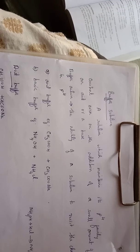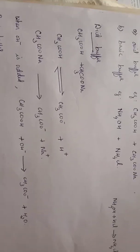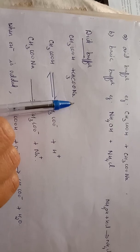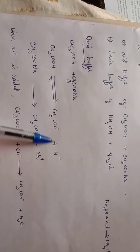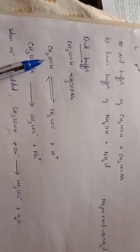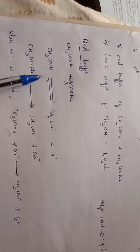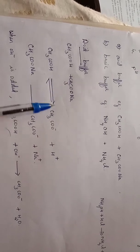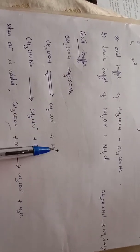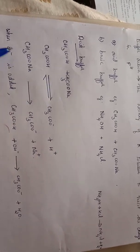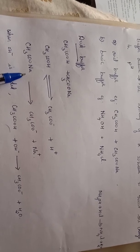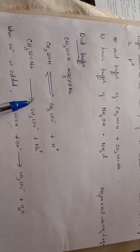Buffer solution is very important — it resists the change in pH. Let's look at the acid buffer action. The acid buffer is a mixture of acetic acid and sodium acetate. Acetic acid is a weak acid and undergoes partial dissociation. Sodium acetate is a salt and undergoes complete dissociation.